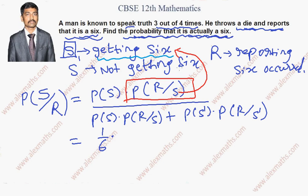6 occurred. After that, he is telling that 6 occurred. It means it is the truth. So 3 by 4 we can substitute.